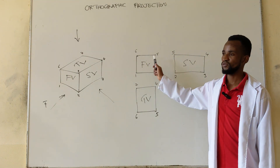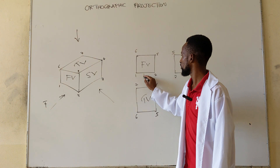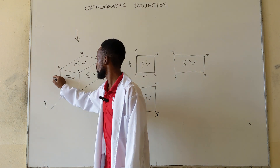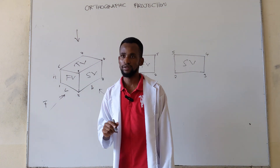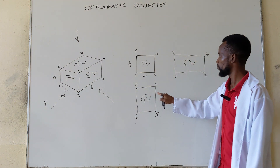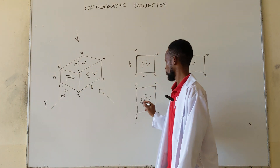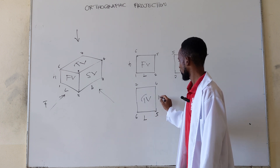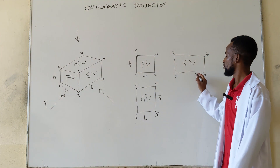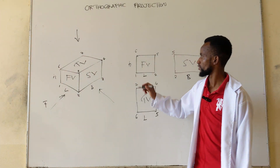For example, on the front view, you'll find that it consists of the length and the height. If this is the length, this is the height, and this is the width or breadth. The front view consists of the length and the height. The top view will consist of the length and the width or breadth. The side view or end view will consist of the breadth and the height.